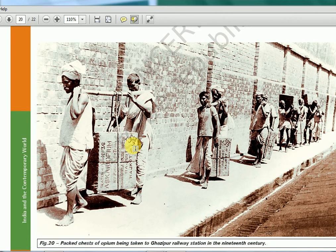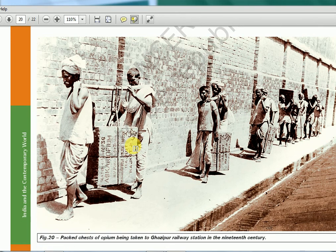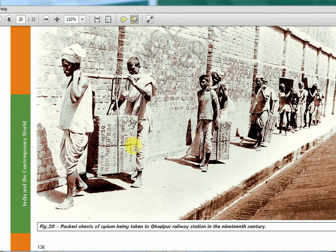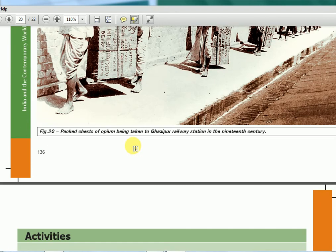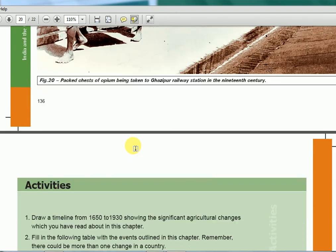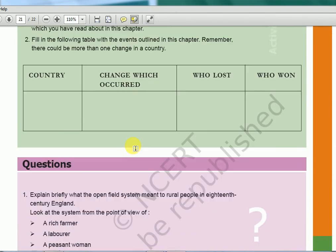There is a picture of packed chests of opium being taken to Ghazi for the railway station in the 19th century — boxes and boxes of opium being transported. So this is about this chapter.